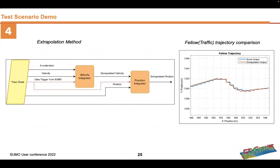Here's our extrapolation method, implemented inside the traffic block in the DSpace ASM model. We integrate the acceleration with the velocity as the initial condition, which gives us an extrapolated velocity. We then integrate that with position as the initial condition, which gives us an extrapolated position. Both integrators are reset every time SUMO writes new data. On the right, the blue line shows the SUMO step — you can see it's missing information for that 200-millisecond gap, which is why the extrapolation is necessary for the simulation to run.